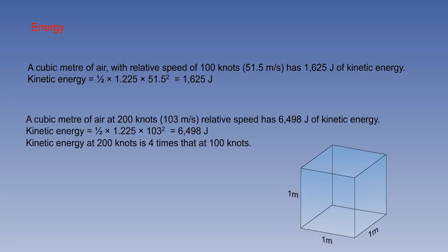However, because kinetic energy varies with speed squared, at 200 knots, which is 103 metres per second, the same cubic metre of air would have 6498 joules of kinetic energy. Notice that when the speed doubles, there is four times the kinetic energy.